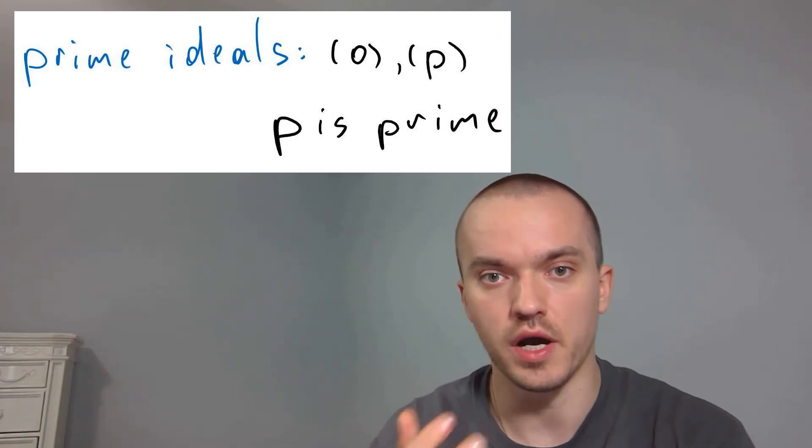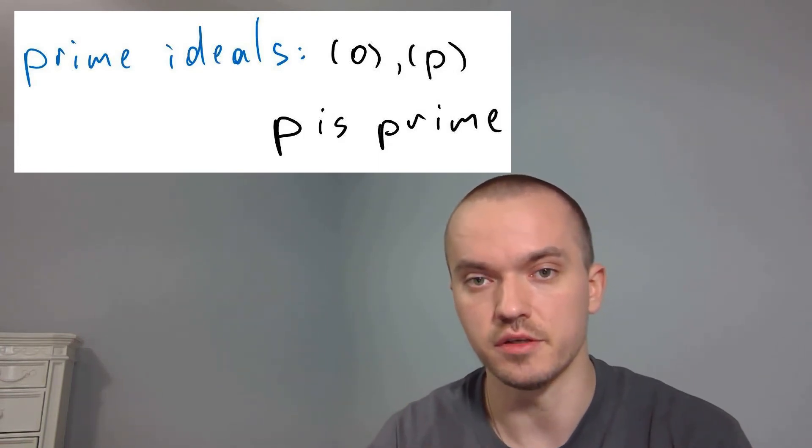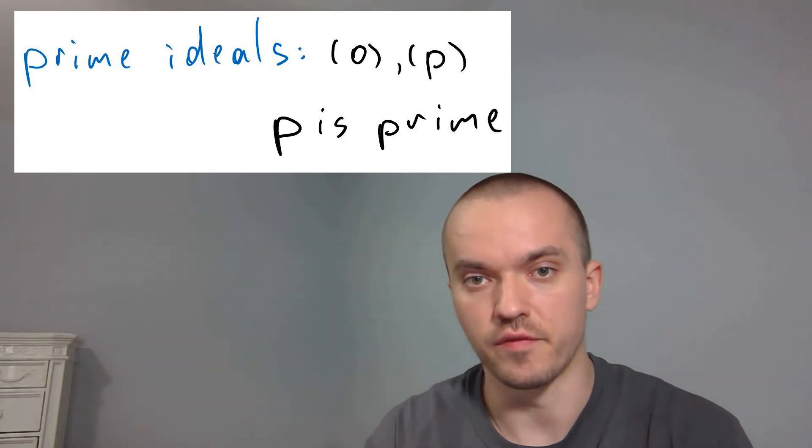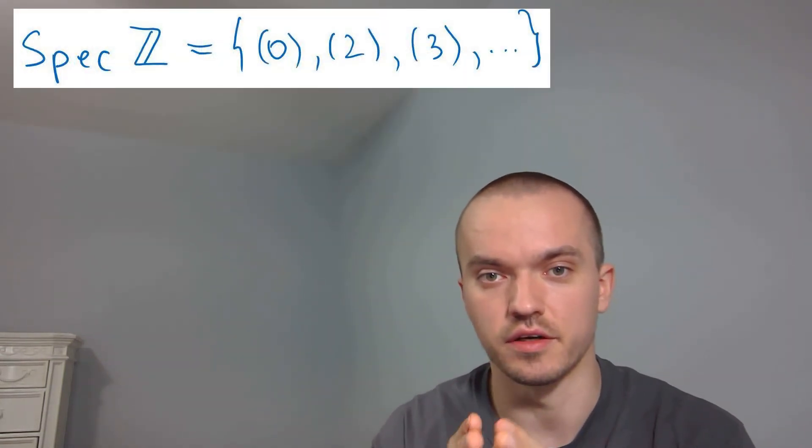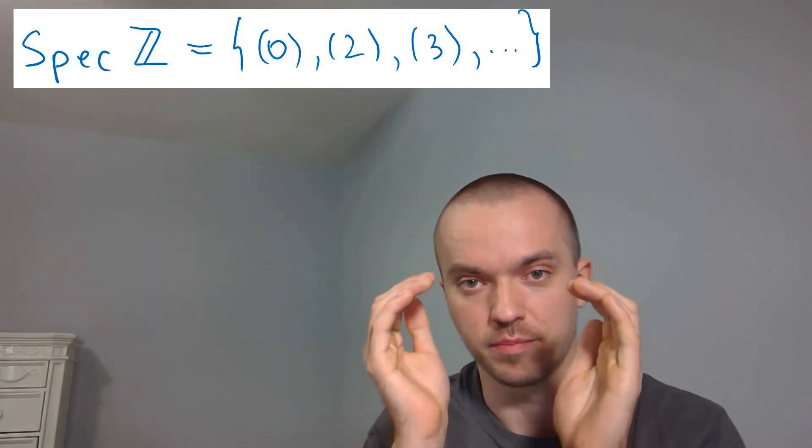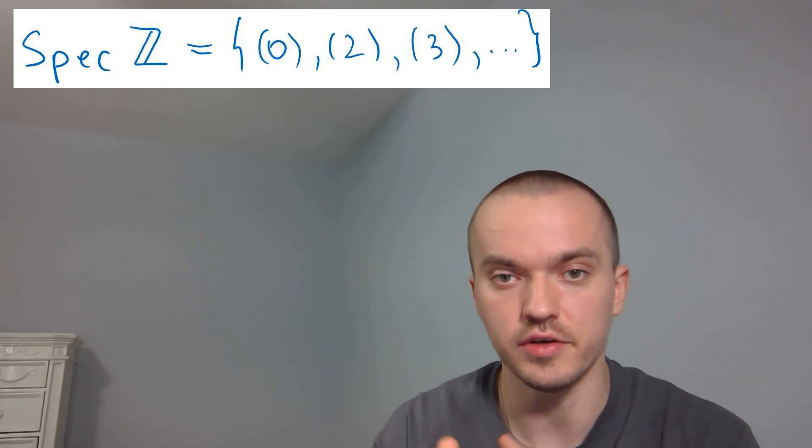So now we have our set which contains ideals generated by prime numbers, like (p), and a zero ideal. Let's sketch this. The way we sketch this is that it's going to be given by discrete points, but they're not the same.